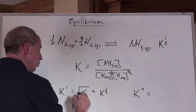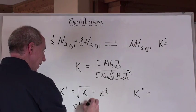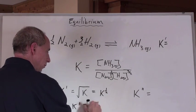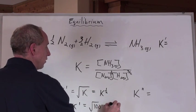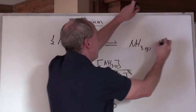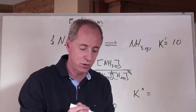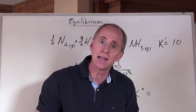So, the K prime here, that new K, for this reaction here, is going to be the square root of a hundred, because that was the original K value, and one hundred to the one half power, or the square root of a hundred, of course, is ten. And so that reaction there has a K value of ten. See how they're related.